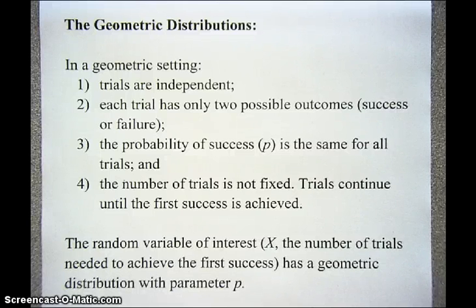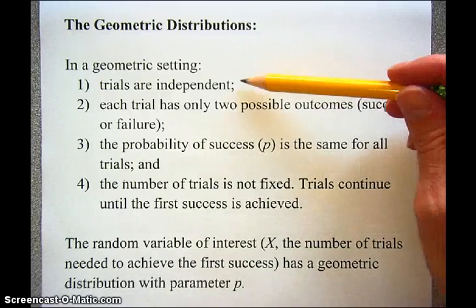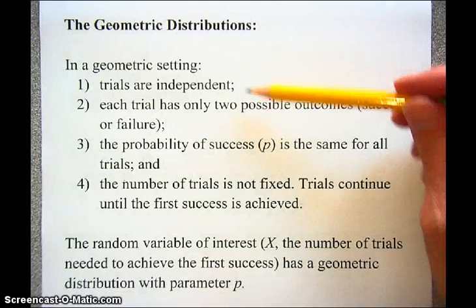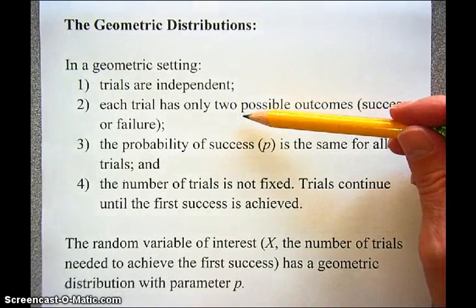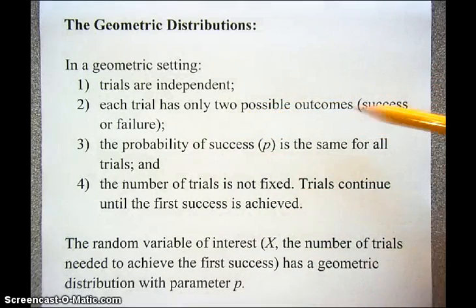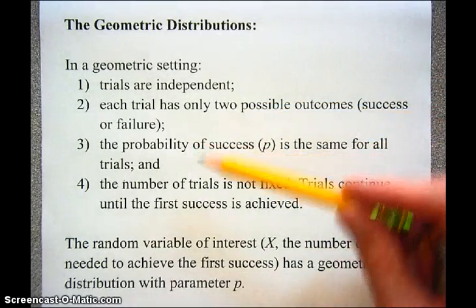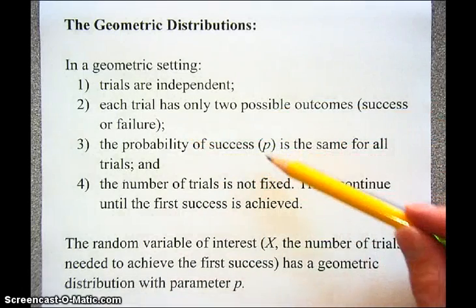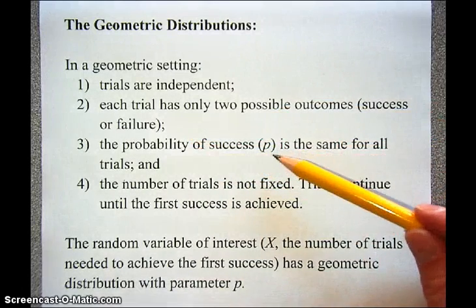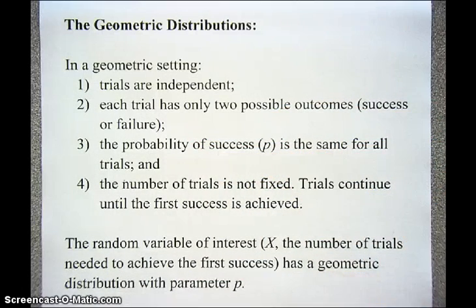In this video, we'll look at the geometric distributions. A geometric setting is similar to a binomial setting in that we have independent trials. Each trial has only two possible outcomes, success or failure, and the probability of success, which we call P, is the same for all trials.